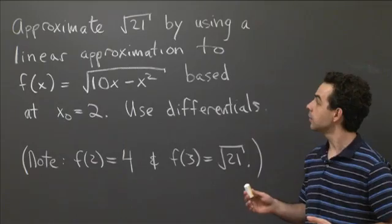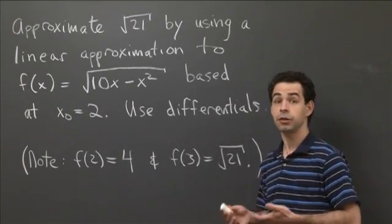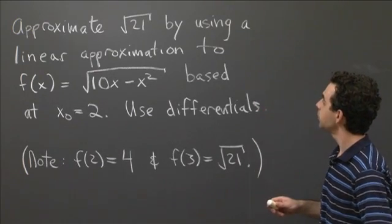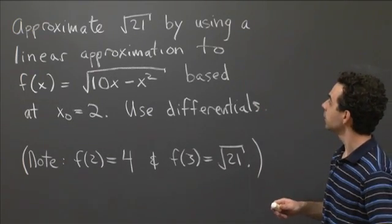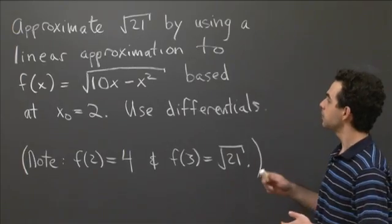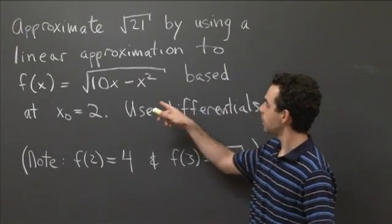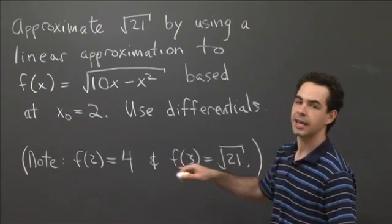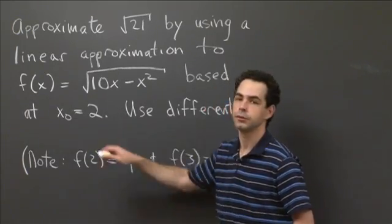I have a problem here that's a linear approximation problem, but I'd like you to do it using the method of differentials. In particular, I'd like you to approximate the square root of 21, and the way I'd like you to do that is by using a linear approximation to the function f(x) = √(10x - x²) based at x₀ = 2.